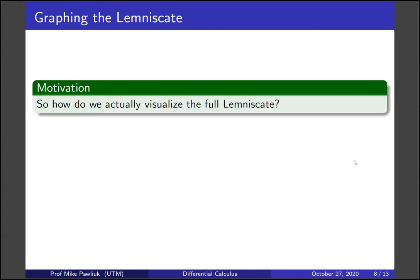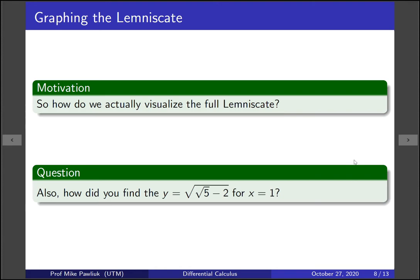So two questions now are: how do we actually visualize the full lemniscate? And another very reasonable question is how did I find that y = √(√5 - 2) for x = 1? Sort of came out of nowhere right? So let's look at that.